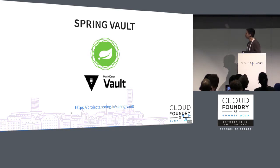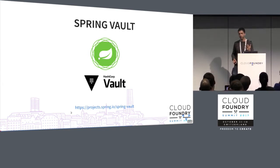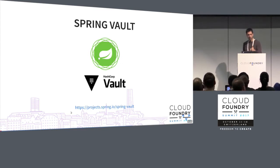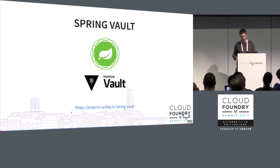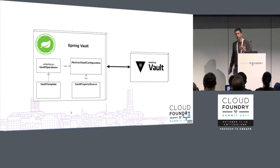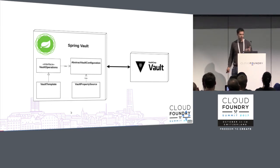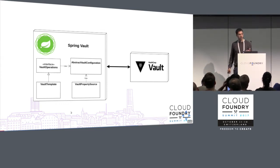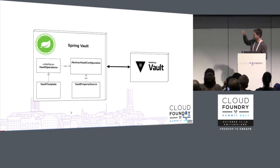The next step is to actually use Vault with Spring. There are two Spring projects. You can use it without the Cloud Config Server by using just the Spring Vault project, or you can use it with the Cloud Config Server. The initial demo shows how it's used with Spring Vault. Spring Vault provides a VaultTemplate — those familiar with Spring know the JdbcTemplate, the OAuth2 template; now there's a VaultTemplate to do most operations against the vault.